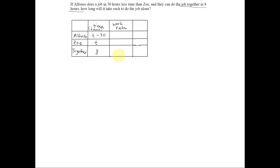This next column is the work rate, and the work rate is how many jobs they can do per their time. So Alfonso can do one job per t minus 30 hours, Zoe can do one job per t hours, and together they can do one job per 8 hours.